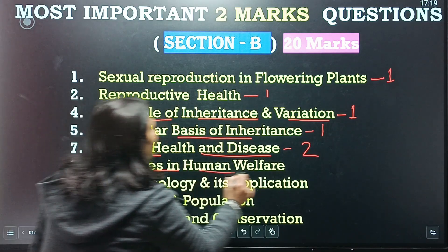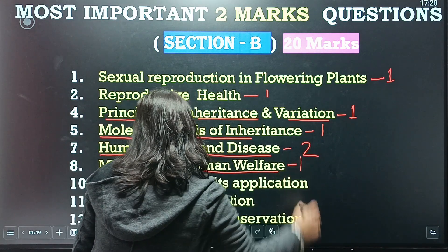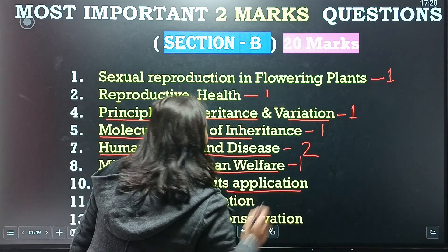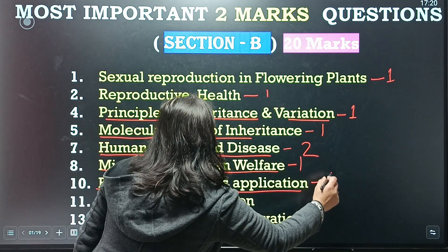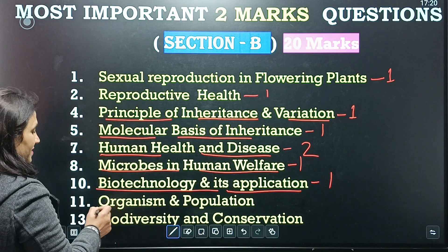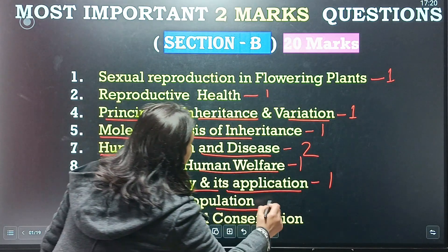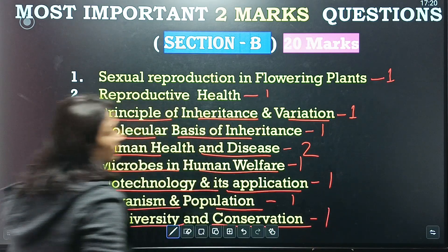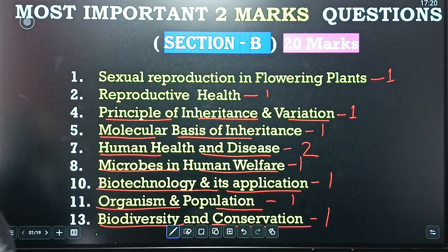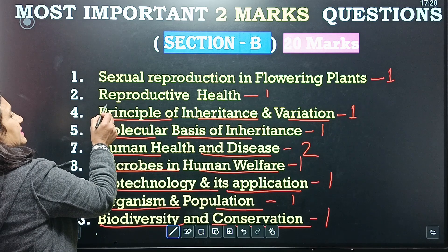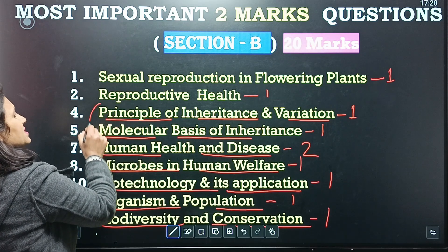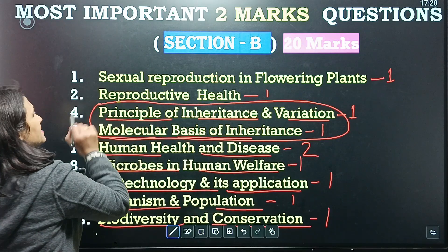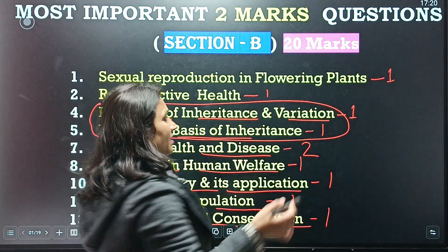Then Microbes in Human Welfare — one question. Then Biotechnology and its Applications — one question. Organisms and Population — one question. Biodiversity and Conservation — one question. Some chapters like Principles of Inheritance and Molecular Basis of Inheritance will also appear in Section C.